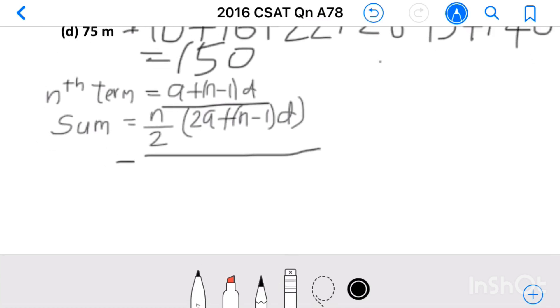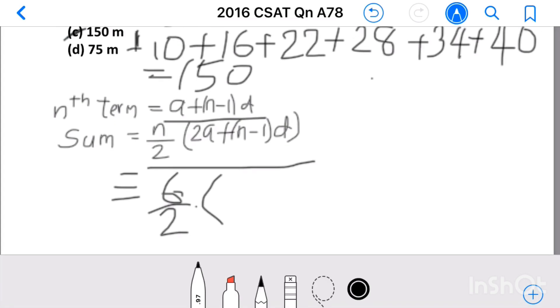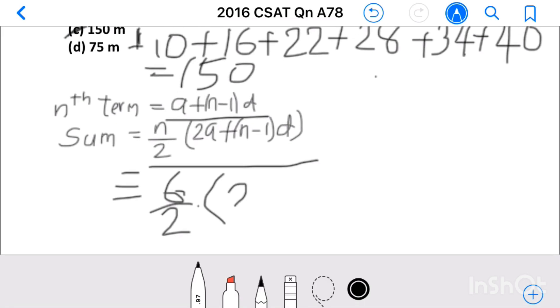By using this equation, we can solve this question like this. n by 2, n is 6, 6 by 2. n is 6, 6 minus 1, 5. d is the common difference, that is equal to 6.